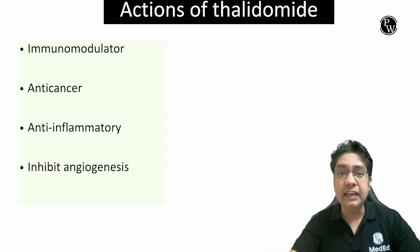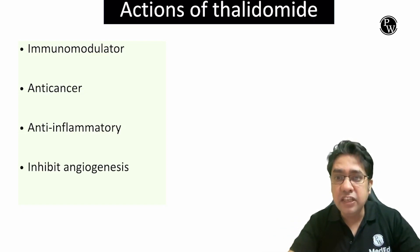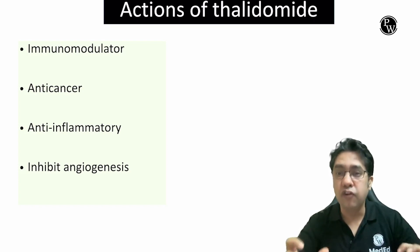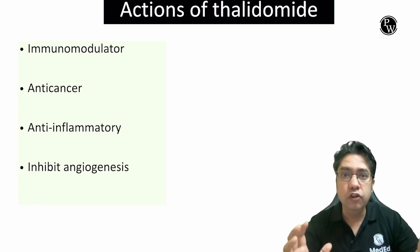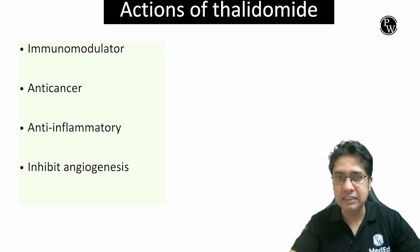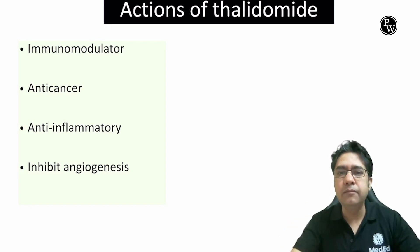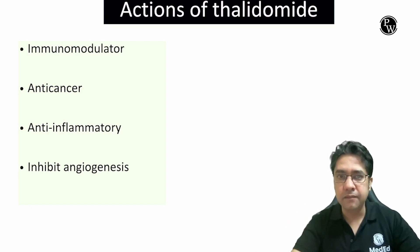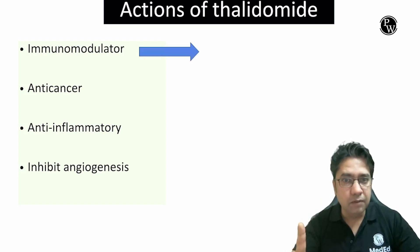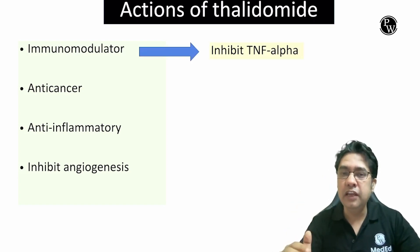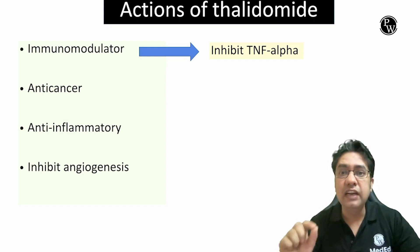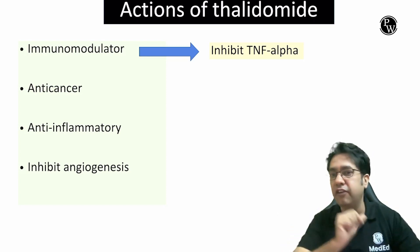And lastly, it inhibits angiogenesis, that is the formation of new blood vessels. The question which is asked is: how does Thalidomide produce its immunomodulatory effect? It reduces immunity by suppressing the production of TNF-alpha.